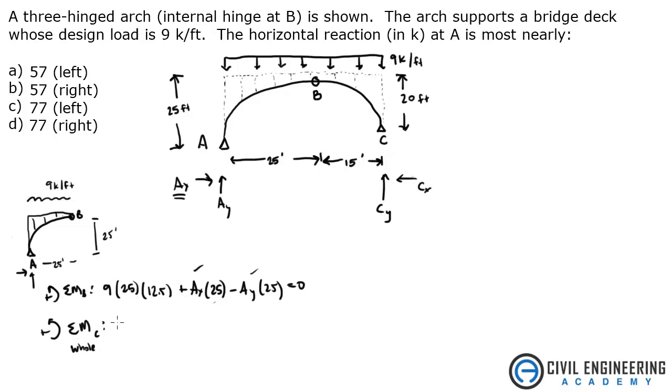So sum of the moments about C, I got nine kips per foot times 40 feet, that's 25 plus 15, plus half that distance, the load's acting at half of that. So again, multiply that by 20 feet, plus AX times five, five feet minus AY times 40.